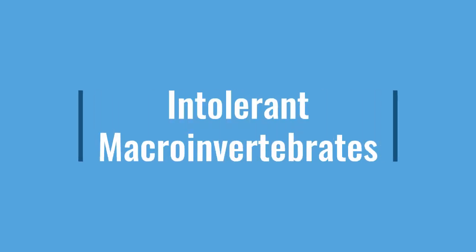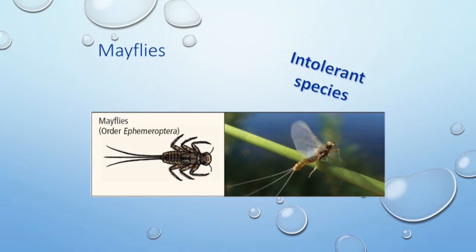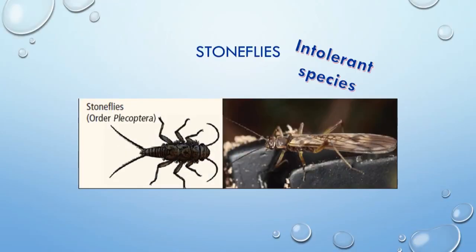Some macroinvertebrates, such as the mayfly, stoneflies, and caddisflies, are sensitive or intolerant to changes in stream conditions brought on by pollutants. Some of these organisms will leave to find more favorable habitats, but others will be killed or will be unable to reproduce.